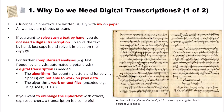Why do we need digital transcriptions? Historical ciphertexts are written usually with ink on paper. You can see an example here on the right side — this is a photo of the Codex Copiale, an 18th-century encrypted book, which you can find on Wikipedia. Usually we only have photos or scans of these ciphertexts. If you want to solve such a text by hand, you do not need a digital transcription. But if you want to perform analysis using a computer, you need a digital transcription.